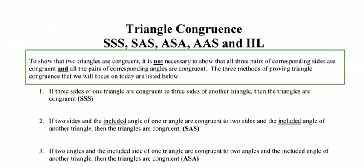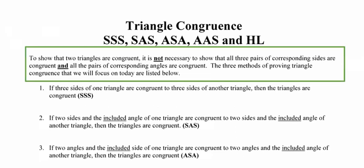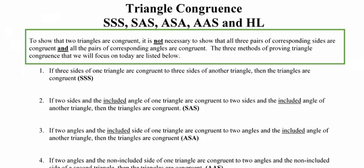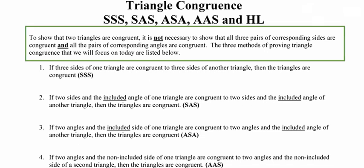We made the determination already that in order to show that two triangles are congruent, we don't necessarily have to show that all three pairs of sides are congruent and all three pairs of angles are congruent. The five methods we are going to use to prove triangle congruence are the five that we talked about when we did the posters.